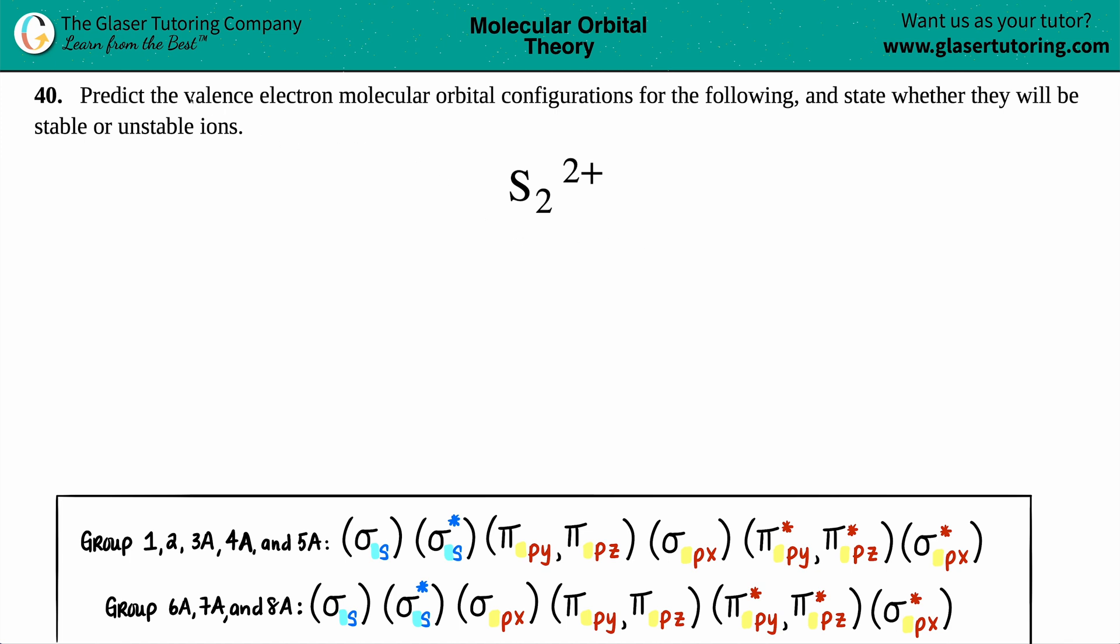Number 40: predict the valence electron molecular orbital configurations for the following and state whether they will be stable or unstable ions. Okay, so before we actually find out the molecular orbital configuration, which is basically this mess down at the bottom, we first have to find out how many total valence electrons are we working with here.